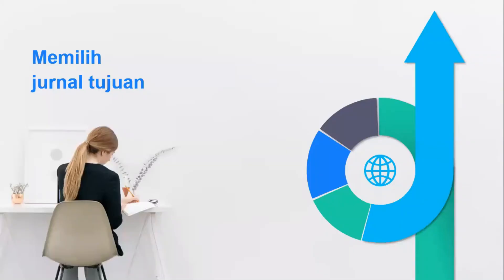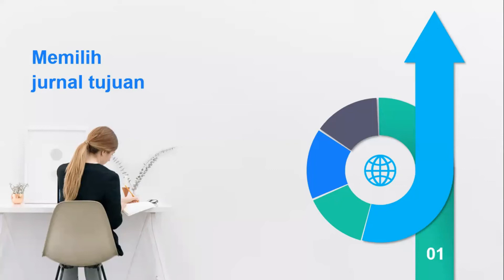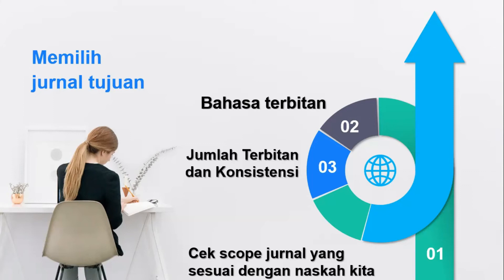Ketika kita sudah menetapkan bahwa akan mempublikasikan sebuah artikel di satu jurnal, kita perlu bijak memilih jurnal tujuan. Pertama, check scope jurnal sesuai dengan naskah kita. Kedua, perhatikan bahasa terbitan — apakah jurnal mempublikasikan artikel hanya dalam bahasa Inggris, atau bisa Indonesia dan Inggris, atau bahasa PBB yang lain. Bagian ketiga adalah melihat jumlah terbitan dan konsistensi: kita perlu menghindari jurnal yang menerbitkan artikel dalam jumlah yang tidak wajar. Jika lonjakannya sangat tidak wajar, kita perlu hindari.